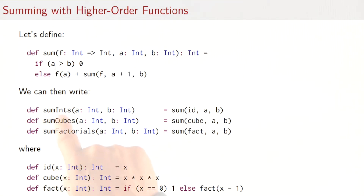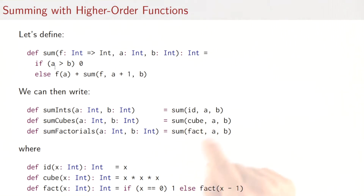Once we have that, we can write sum ints, sum cubes, and sum factorial as follows. Sum ints would be simply sum of id of a, b, where the id function simply returns its parameter unchanged. Sum cubes would be sum of cube and a, b, where the cube function is as we've seen before. And finally, sum factorial is sum of fact and a, b, where the fact function is the factorial function. So what we've done effectively is reuse the pattern that defines the sum function so that we had to write it only once, and we could reuse it in the three definitions of the particular sums.